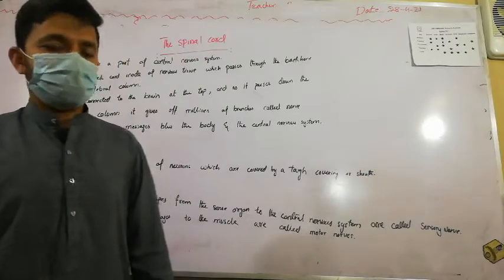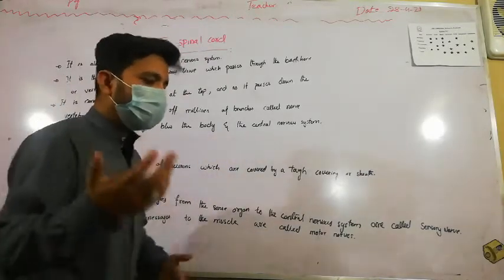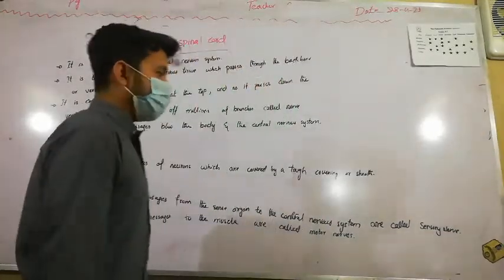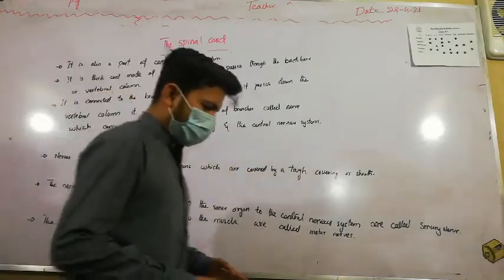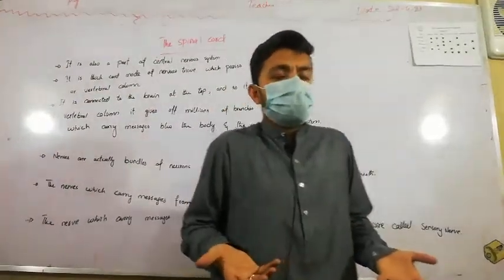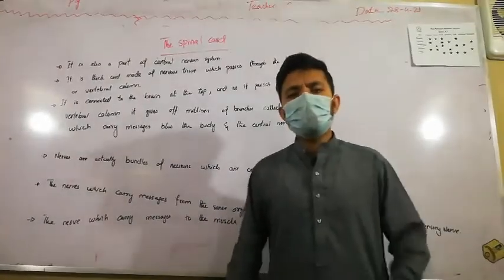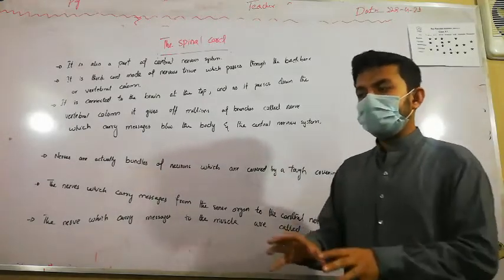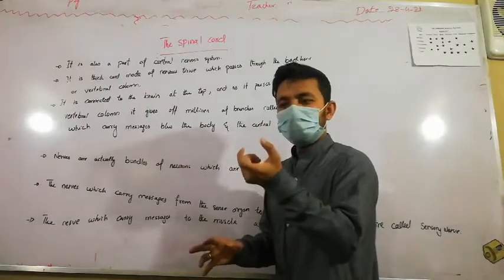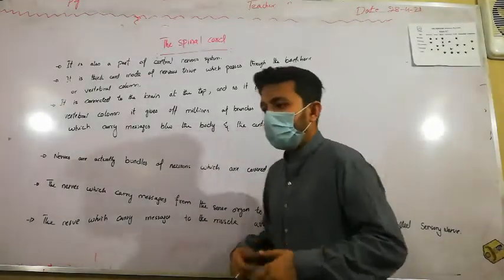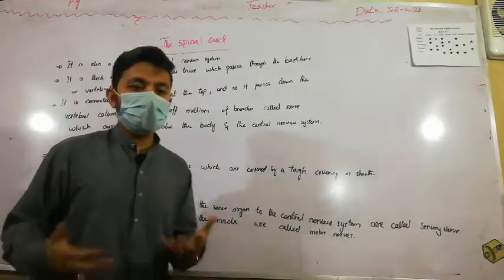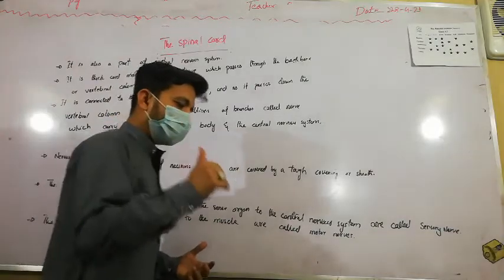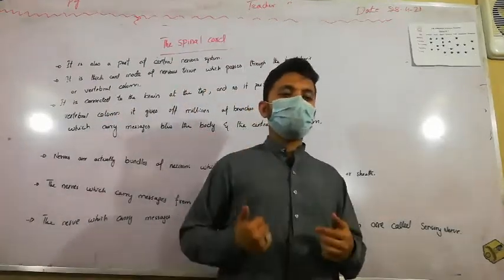What is the spinal cord? The spinal cord is also a part of the central nervous system. If we look at its structure, we can observe that it is a thick cord made up of nerve tissues, which passes through our backbone and vertebral column.